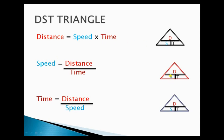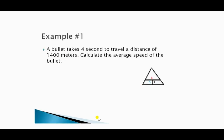To find the speed, we cover up the S, so we have D over T, which means speed equals distance divided by time. To find the time, we cover up the T and we have D over S remaining, therefore time equals distance over speed.